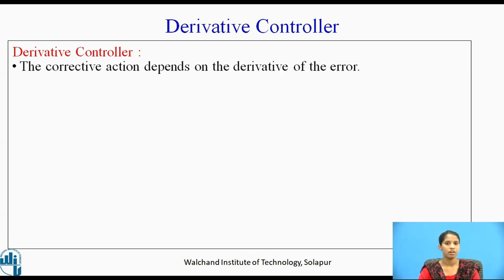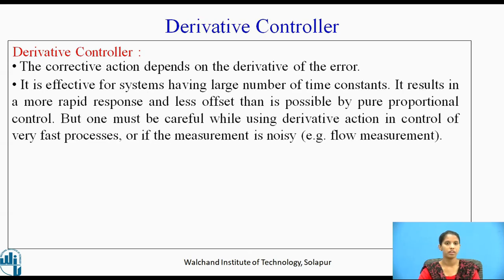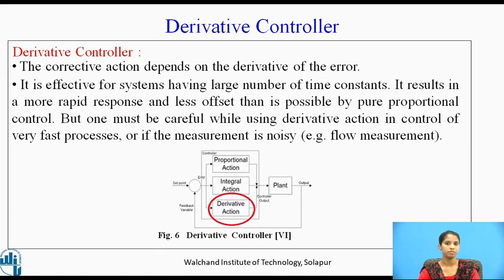Derivative controller. The corrective action depends on the derivative of the error. The derivative controller is effective for systems having a large number of time constants. It results in a more rapid response and less offset than is possible by pure proportionality. One must be careful while using the derivative action in control of very fast processes or if the measurement is noisy, for example, flow measurement. Figure 6 shows the derivative controller, which has a combination of proportional, integral, and derivative action.